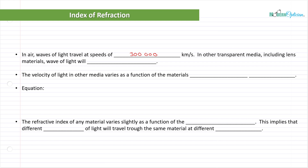In air, waves of light travel at a speed of 300,000 kilometers per second. We already know this. But in other transparent media, including lens materials, the waves of light will slow down. Very, very important concept in refraction: the concept of refraction is slowing light down. In air, which is our constant and what we use as our basis of everything, it travels at 300,000 kilometers per second. Any material that it refracts through, it will be slowing down. So the velocity of light in other media varies as a function of the material's refractive index.